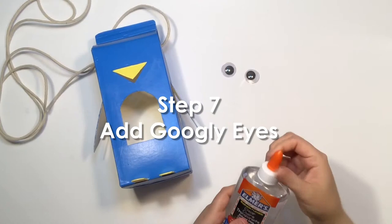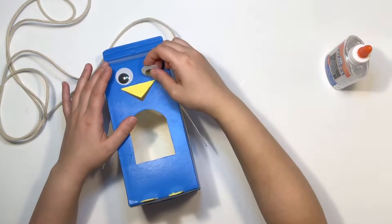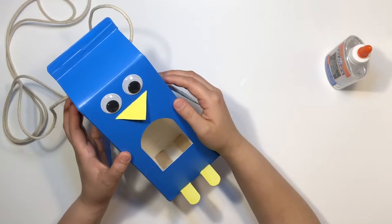Step seven: add googly eyes. Finally, add some glue for your googly eyes, but remember to not add too much so it doesn't squish out the sides. Press your eyes in firmly and let them dry.